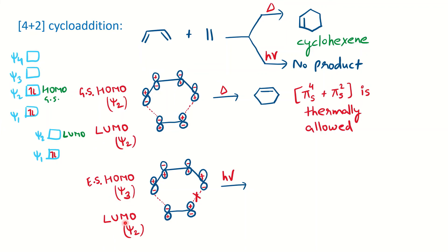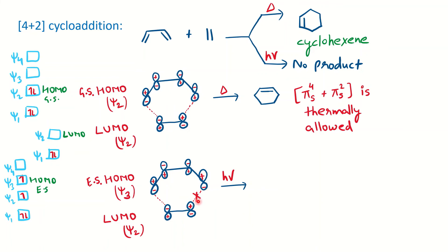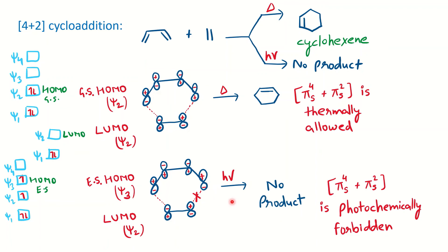Under photochemical conditions for 4+2, the excited state HOMO participates. For 1,3-butadiene (4 orbitals, 4 pi electrons), one electron from ψ2 (ground state HOMO) moves to ψ3, making ψ3 the excited state HOMO with orbital picture plus-minus-minus-plus. Combined with the LUMO of ethene (ψ2, minus-plus), bonding forms on one side but not the other. Therefore 4+2 is photochemically forbidden. The antarafacial option is also not possible because of the small ring size.